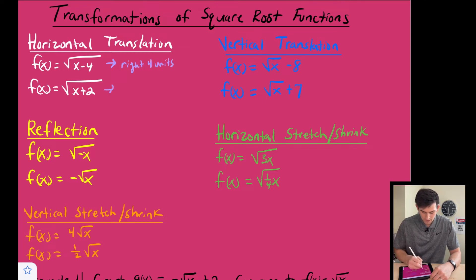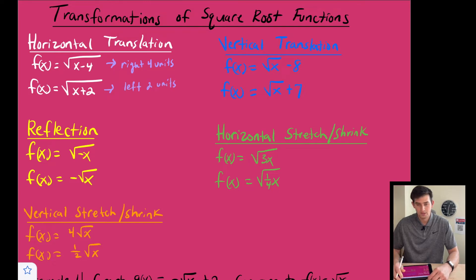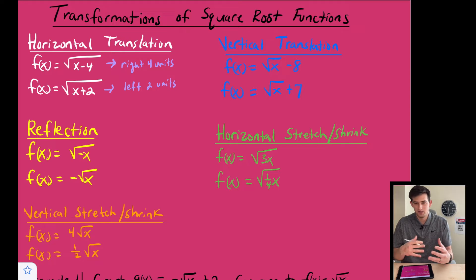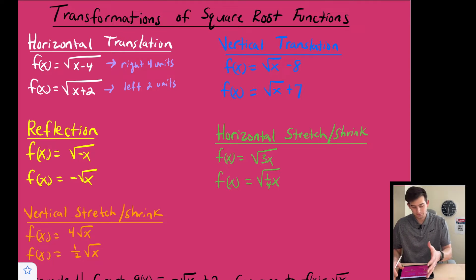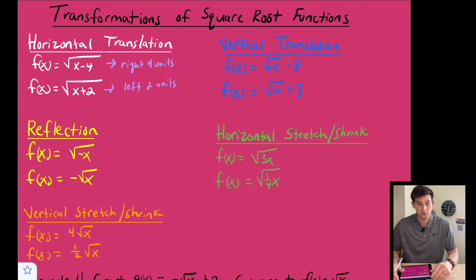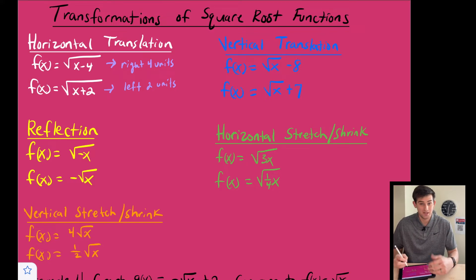The next one is √(x + 2), which tells us to shift left two units. For horizontal translation it's kind of the opposite of what it looks like — if it says minus four, we're going right four, and if it says plus two, we're going left two.